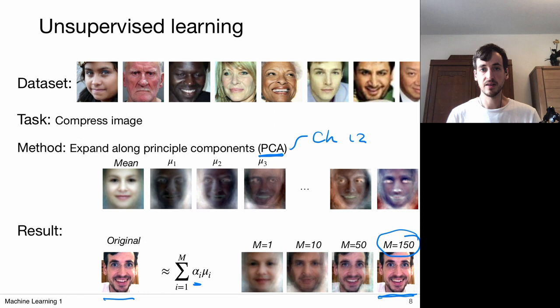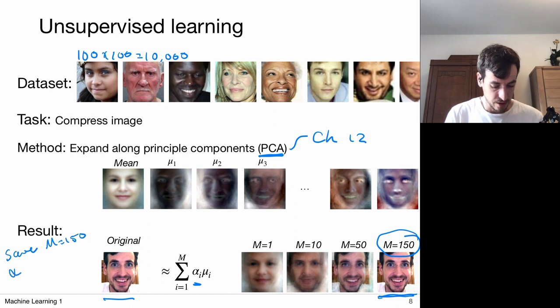Okay, so what does this tell us? Instead of saving 100 by 100 pixels, so 10,000 of these values, I can also just save 150 alpha coefficients. And this saves me a lot of memory.